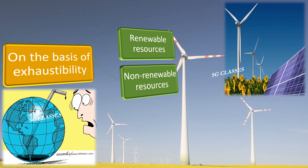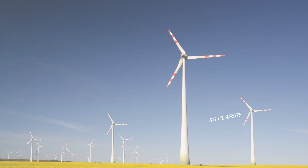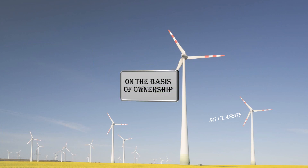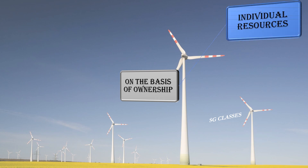On the basis of ownership, individual resources are those which are owned by an individual and cannot be accessed by someone else. Examples include land, property, houses, cars, etc. Your own house and your own car are your individual resources.